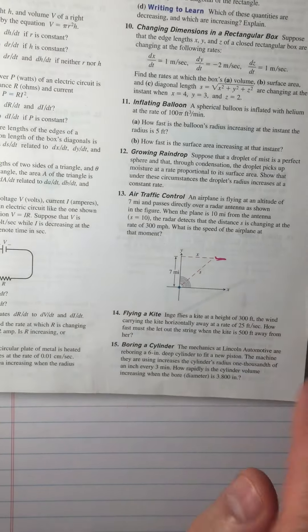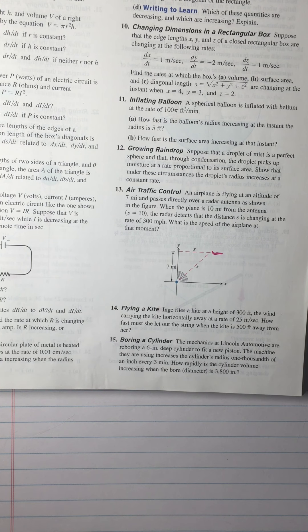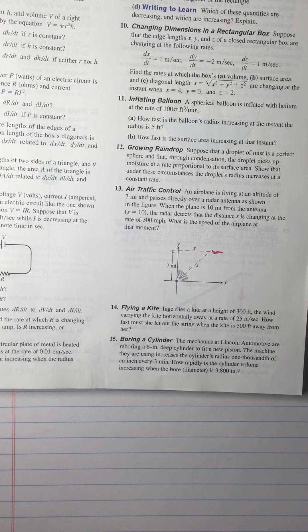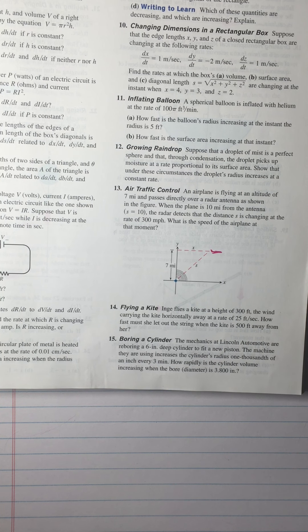So rather than do more of that same problem, we're going to jump ahead to number 14, flying a kite. Let's go fly a kite up to the highest height, up through the atmosphere, up where the air is clear.